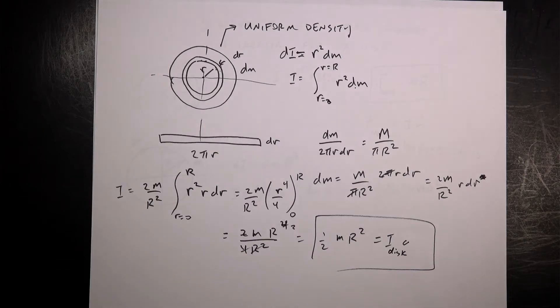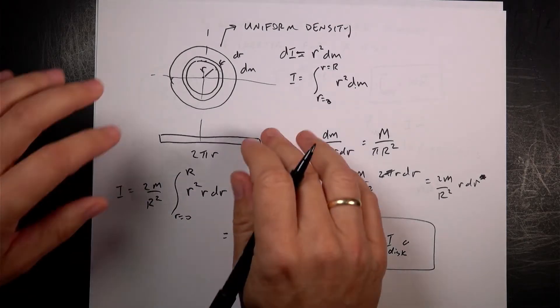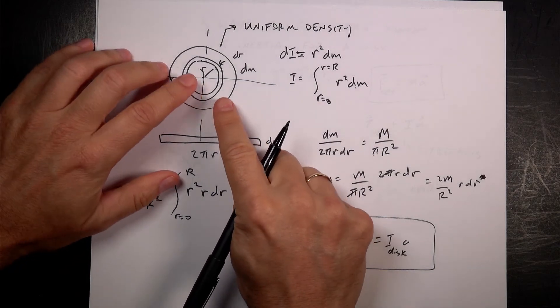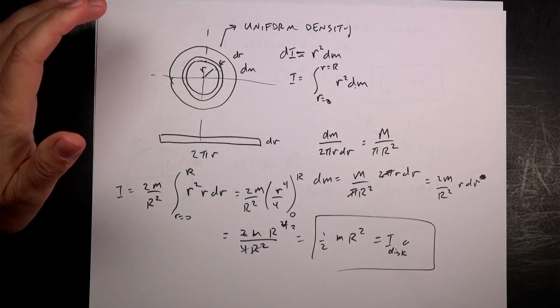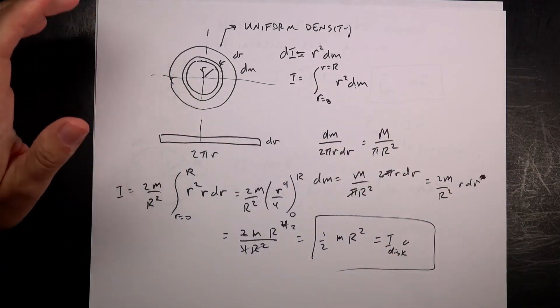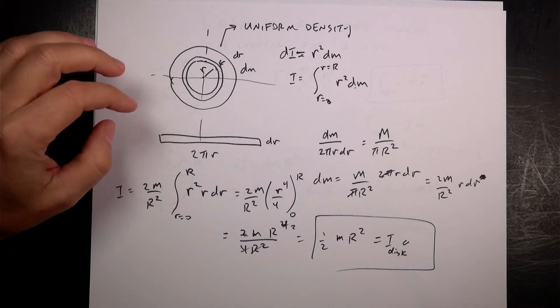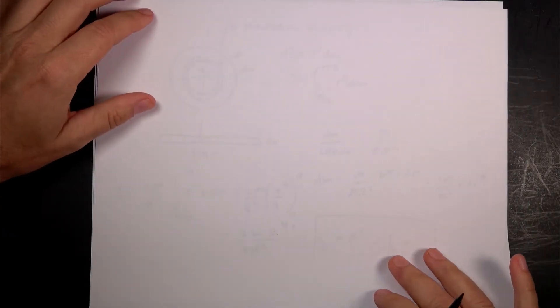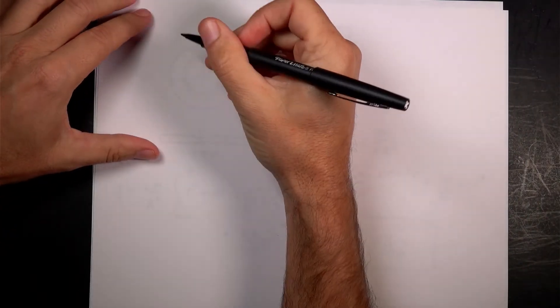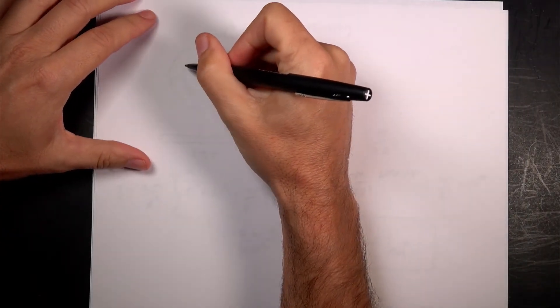Okay, that's one way — the way I like to do it, because I build up by doing the ring first, and then once you know the moment of inertia of a ring that becomes easier. But what if you don't want to use the moment of inertia of a ring? That's fine, you don't have to. Let's do it the second way.